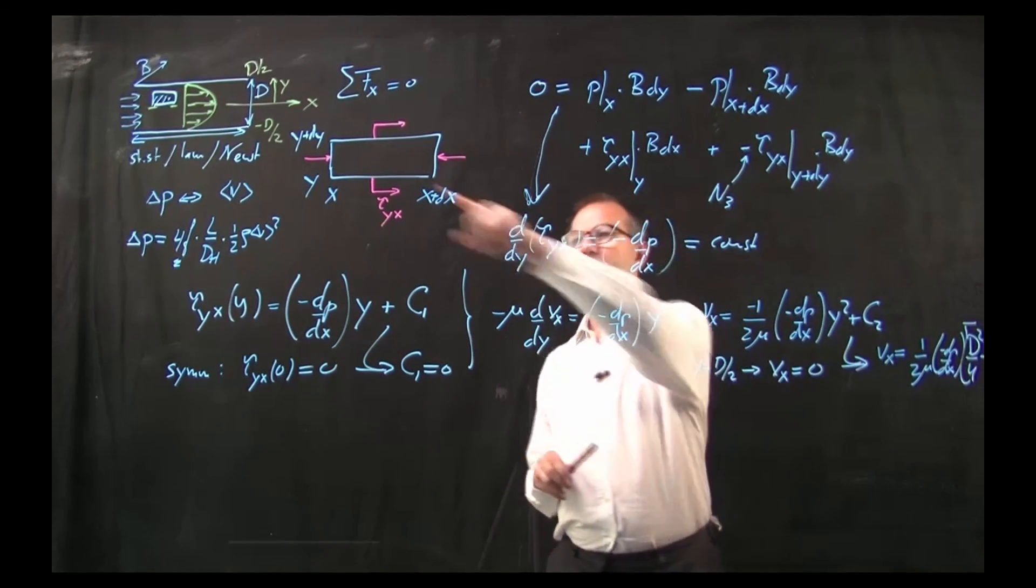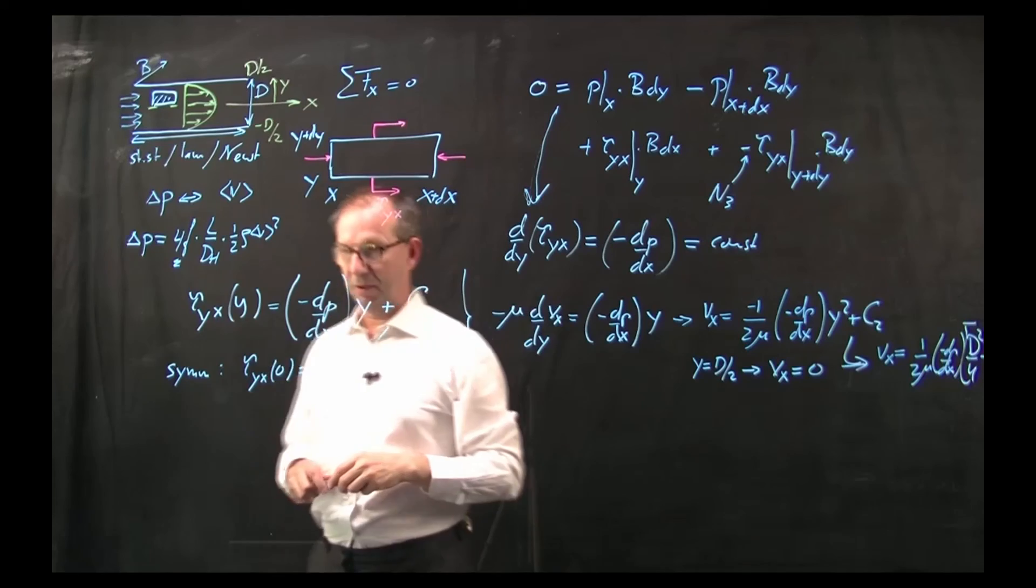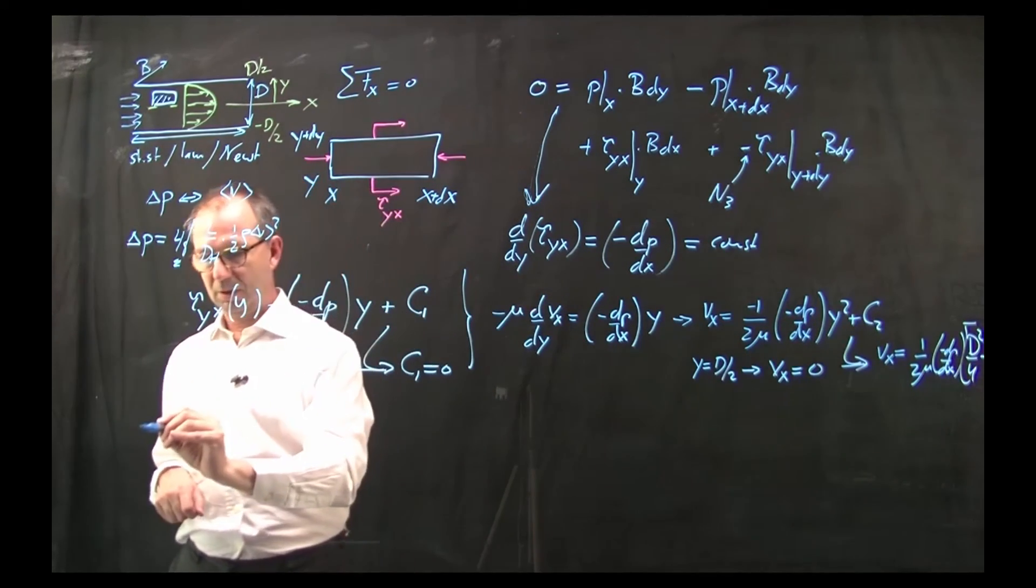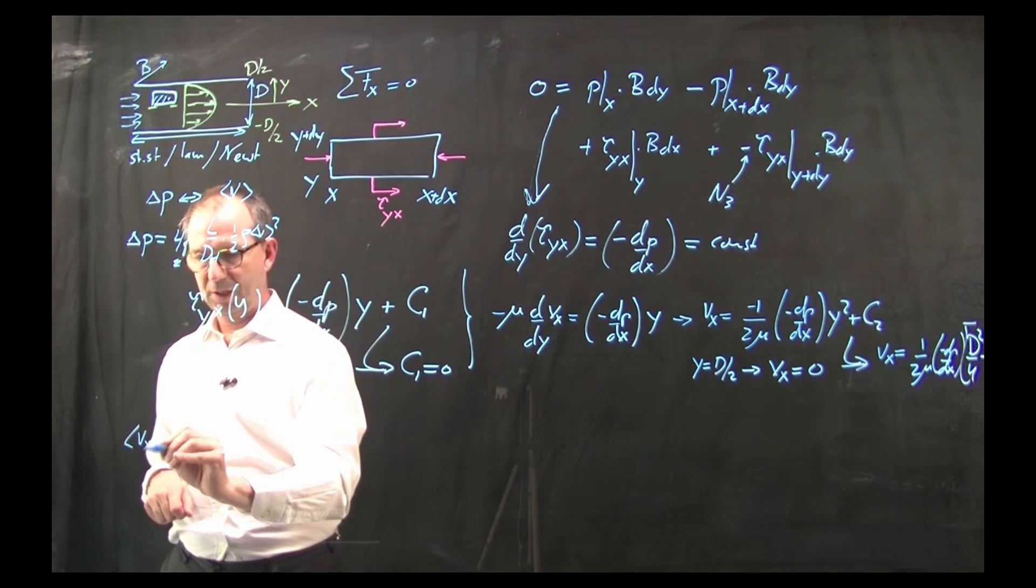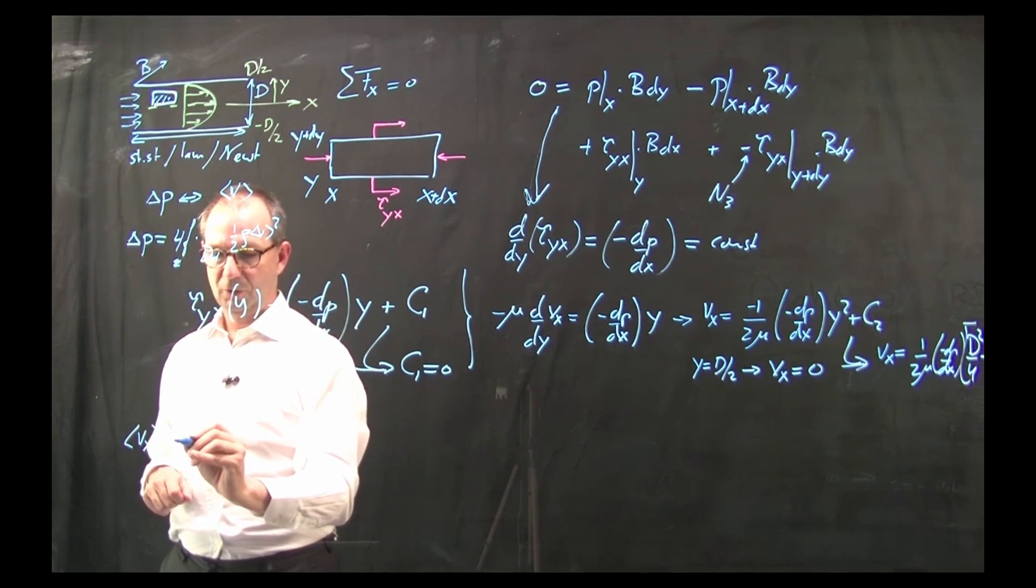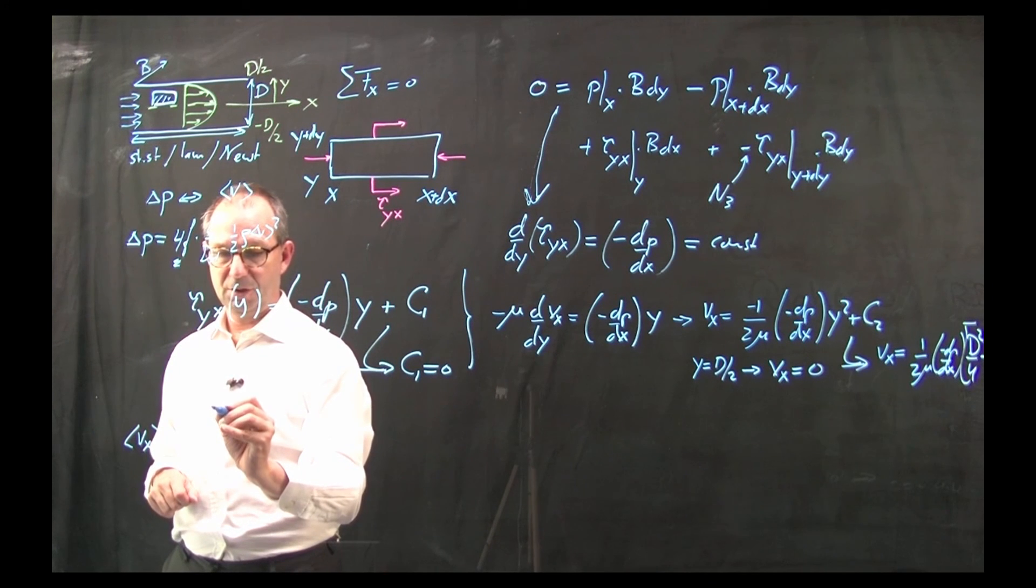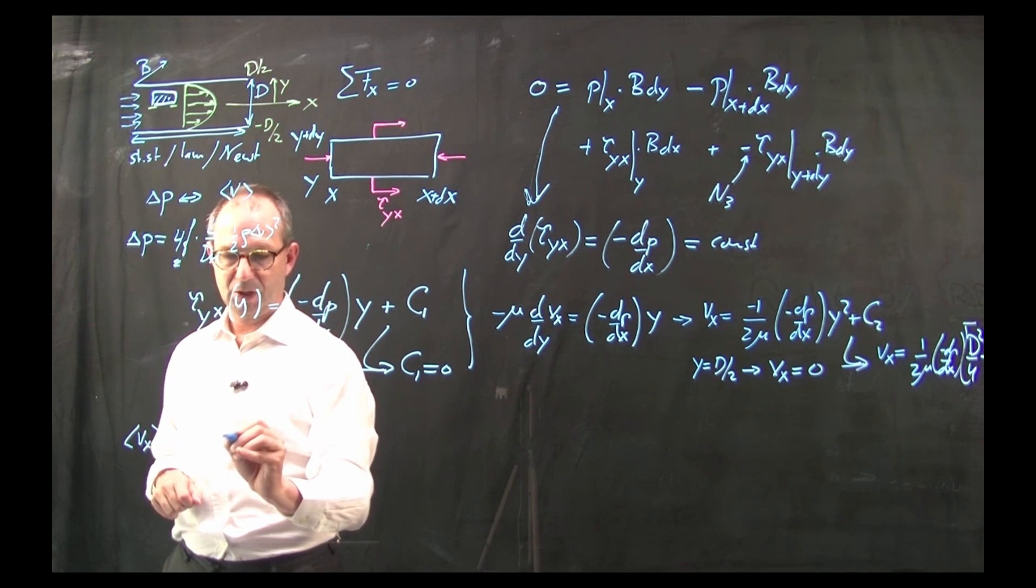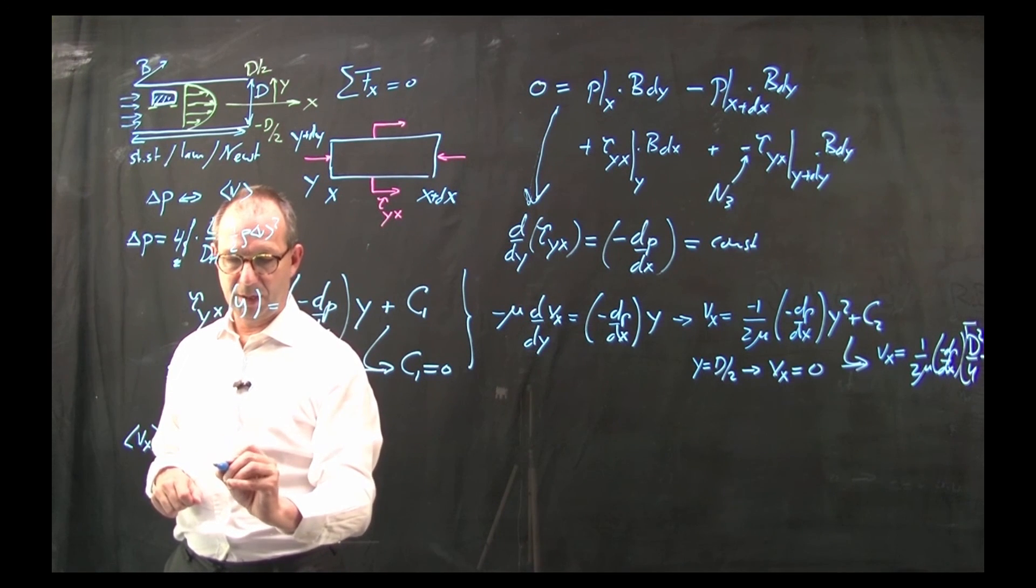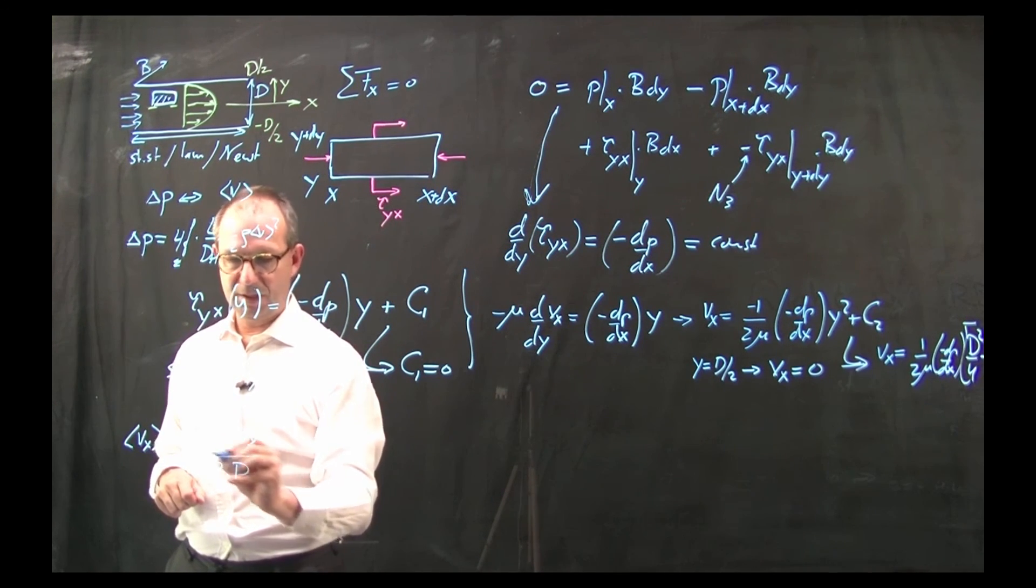Alright, now I have V, that is the parabola that I drew here. But I need the average velocity. So I need to calculate the average velocity.